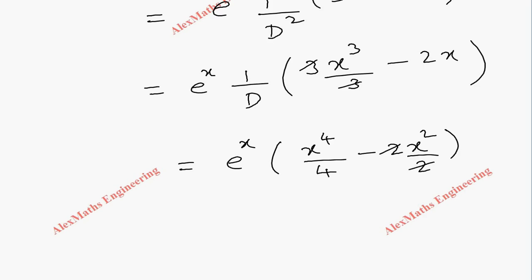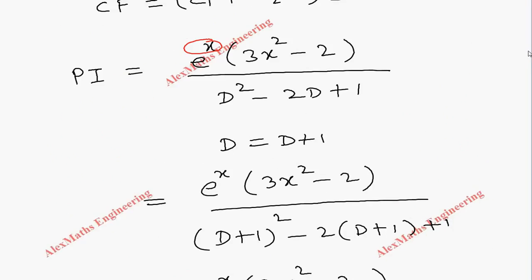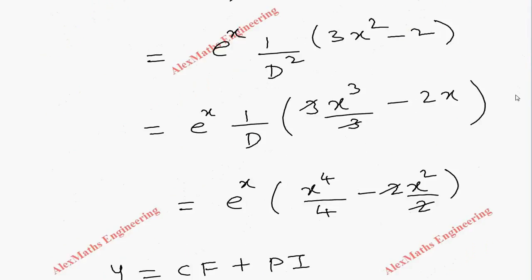You can cancel this. So the complete solution is y equals CF plus PI. CF already we have written here: c1 plus c2x times e to the power x.